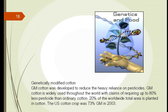We have changed cotton, just like in the last unit we saw how we changed corn. Because of the boll weevil we had to use a large amount of pesticides, but by changing the DNA structure we can change the cotton so that it becomes cheaper to grow. We're no longer having to use thousands of dollars worth of pesticides — we can use 80% less pesticides than with our original cotton. The U.S. cotton crop in 2003 was 73% genetically modified.